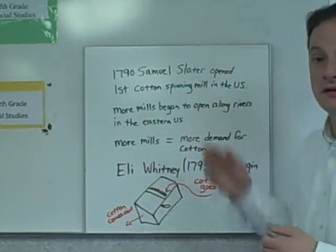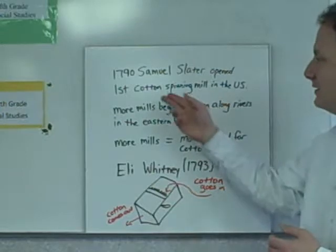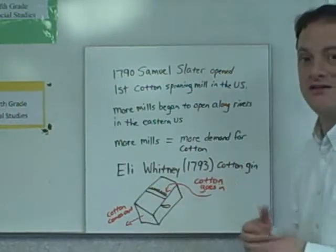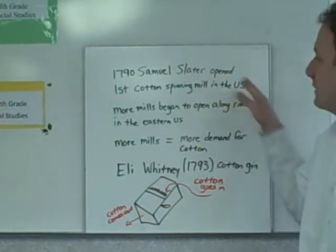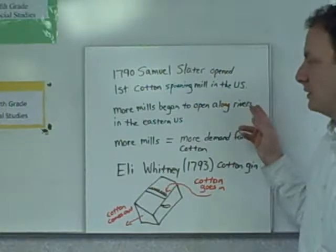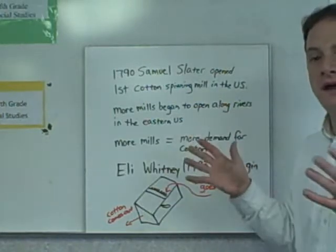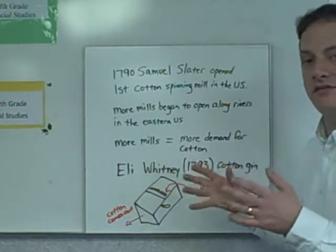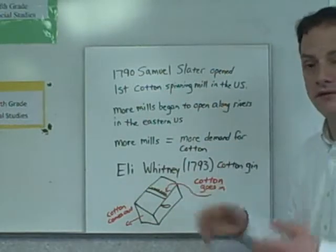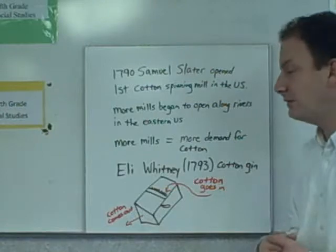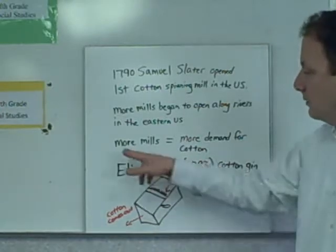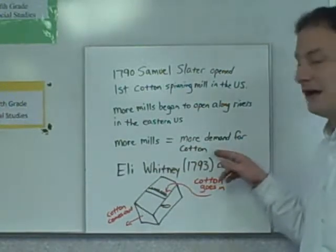Some people think that Slater may have stolen the design for creating a cotton spinning mill and brought it to the United States. In 1790, Samuel Slater opened the first cotton spinning mill here. More mills began to open along rivers in the eastern United States, and Slater started making lots of money. More mills meant more demand for cotton — the more factories making products from cotton, the more people wanted cotton.